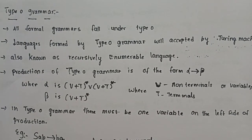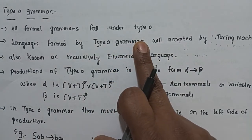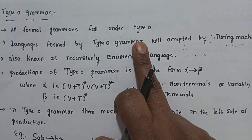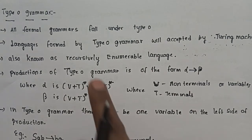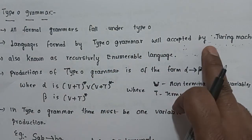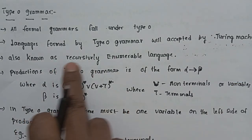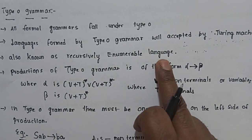Coming to the first type, type 0 grammar: all formal grammars fall under type 0. Languages formed by type 0 grammar will be accepted by the Turing machine. This type 0 grammar produces a recursively enumerable language.